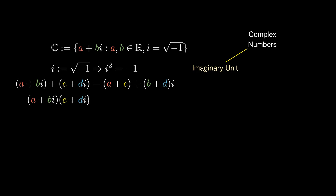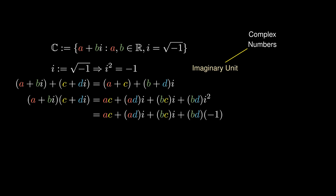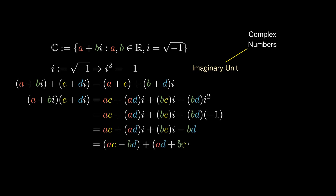Likewise, when multiplying two complex numbers, we can apply the rainbow method to obtain ac + adi + bci + bd·i². Since i² equals -1, we replace i² with -1. We can then simplify and collect terms to get another complex number of the form (ac - bd) + (ad + bc)i.